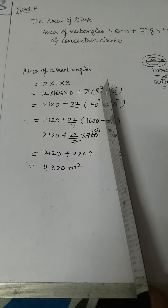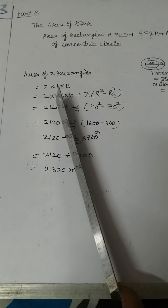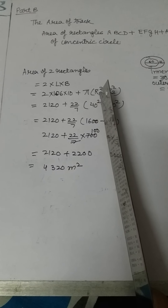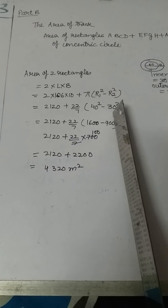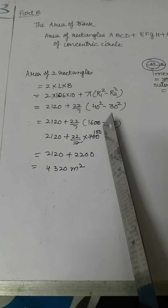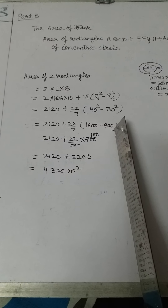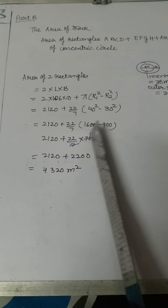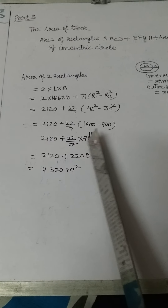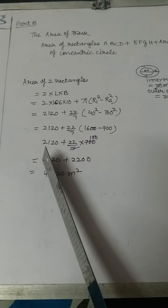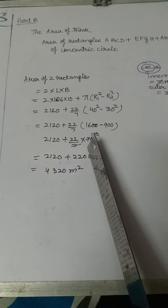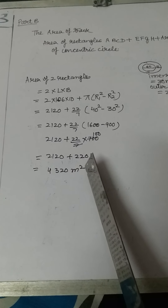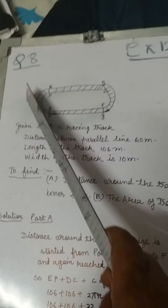Area of the track equals area of two rectangles plus area of the concentric circle. For two rectangles: 2 × 106 × 10 = 2120. For the concentric circle: π(R1² − R2²) = 22/7 × (40² − 30²) = 22/7 × (1600 − 900) = 22/7 × 700 = 22 × 100 = 2200. Therefore, total area of the track = 2120 + 2200 = 4320 square meters.